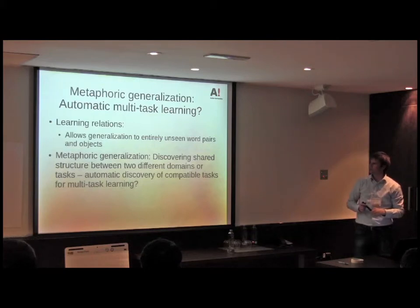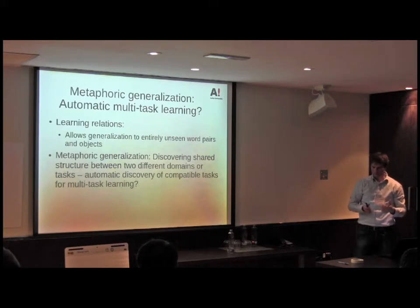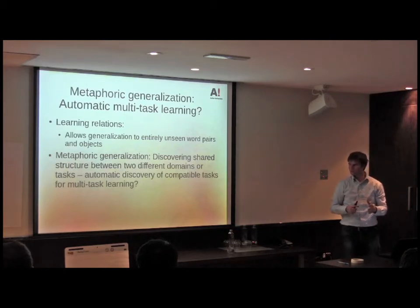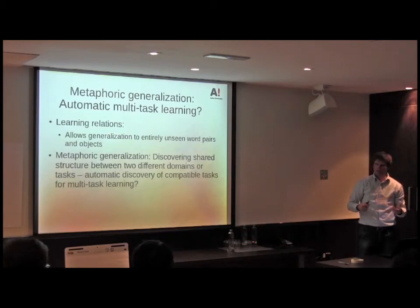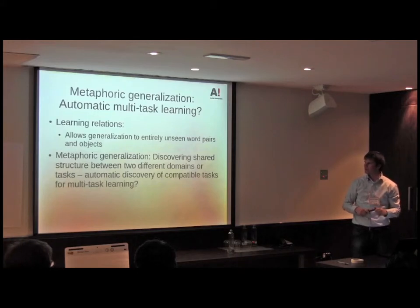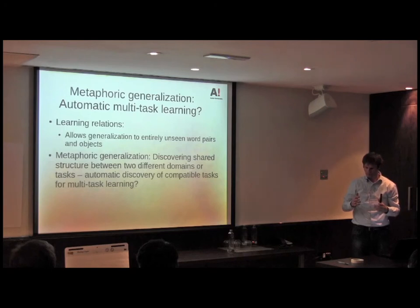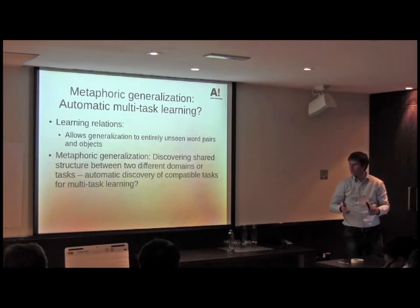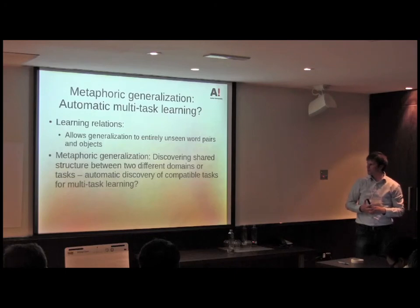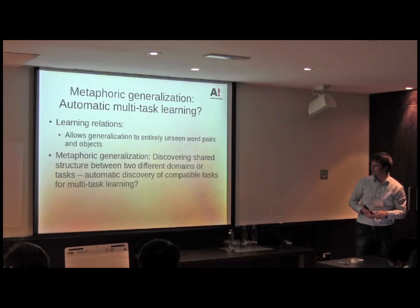The point about learning relations is that it allows us to generalize to completely unseen object pairs. If I know something is following something else, I don't need to know the object categories — just that they are physical objects. If an alien from outer space is following me, I can infer that really well. Related to much that has been said in this workshop: metaphoric relation generalization, which is known to happen in linguistics — applying one concept from one domain to a completely different domain, like describing time as movement ('time flies') — may be some kind of automatic discovery of compatible tasks for multitask learning, taking this relation one step further.